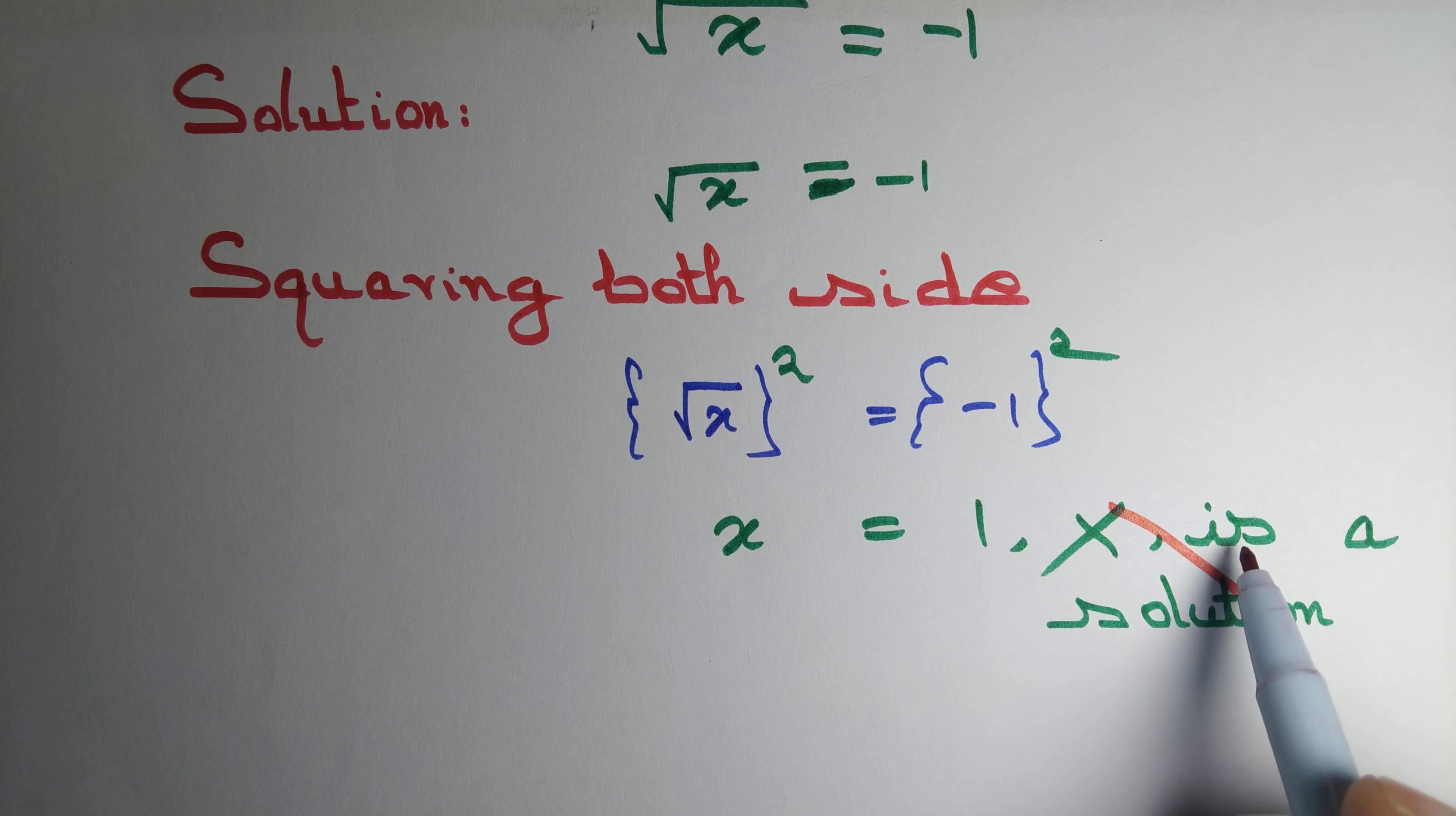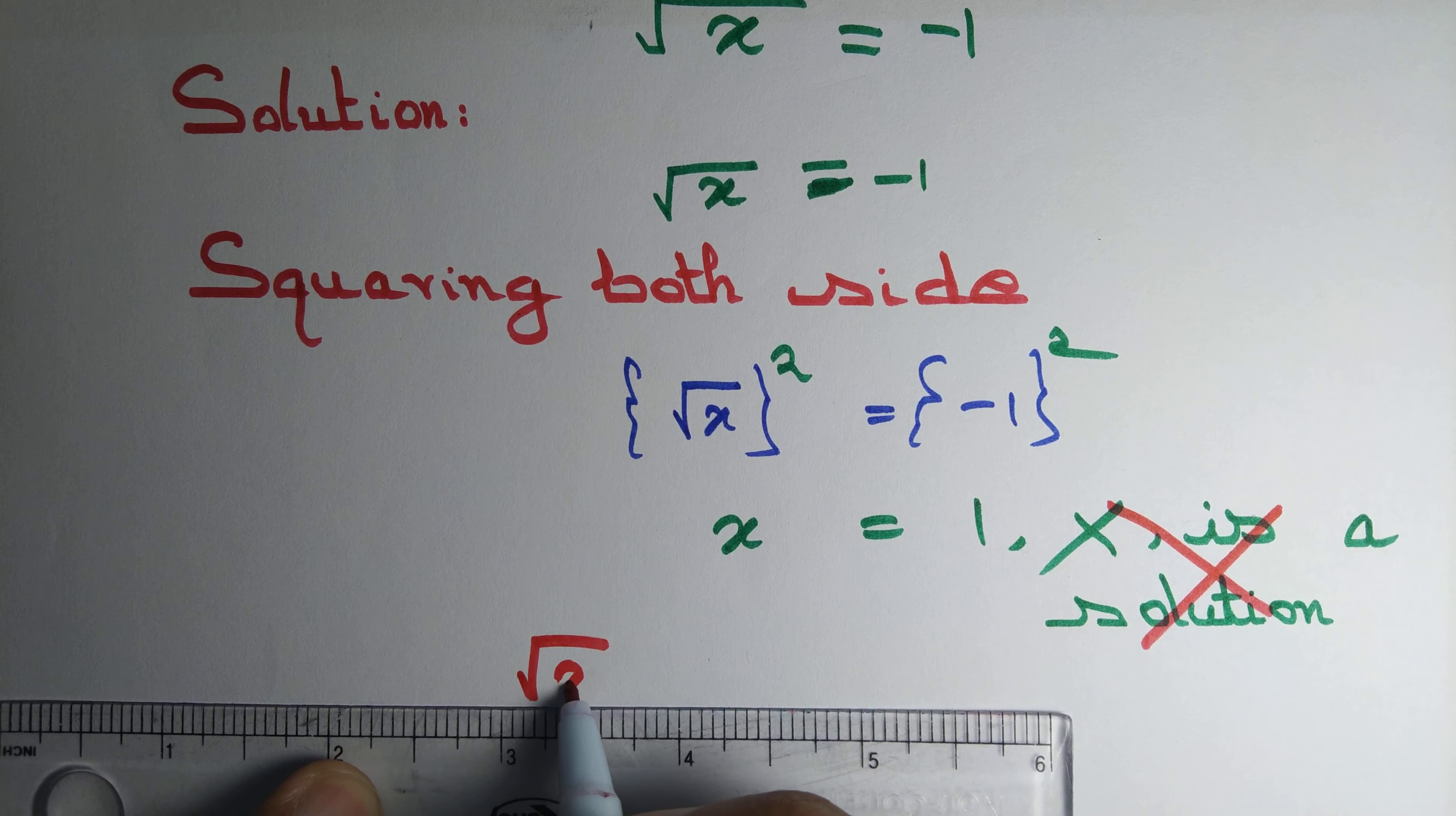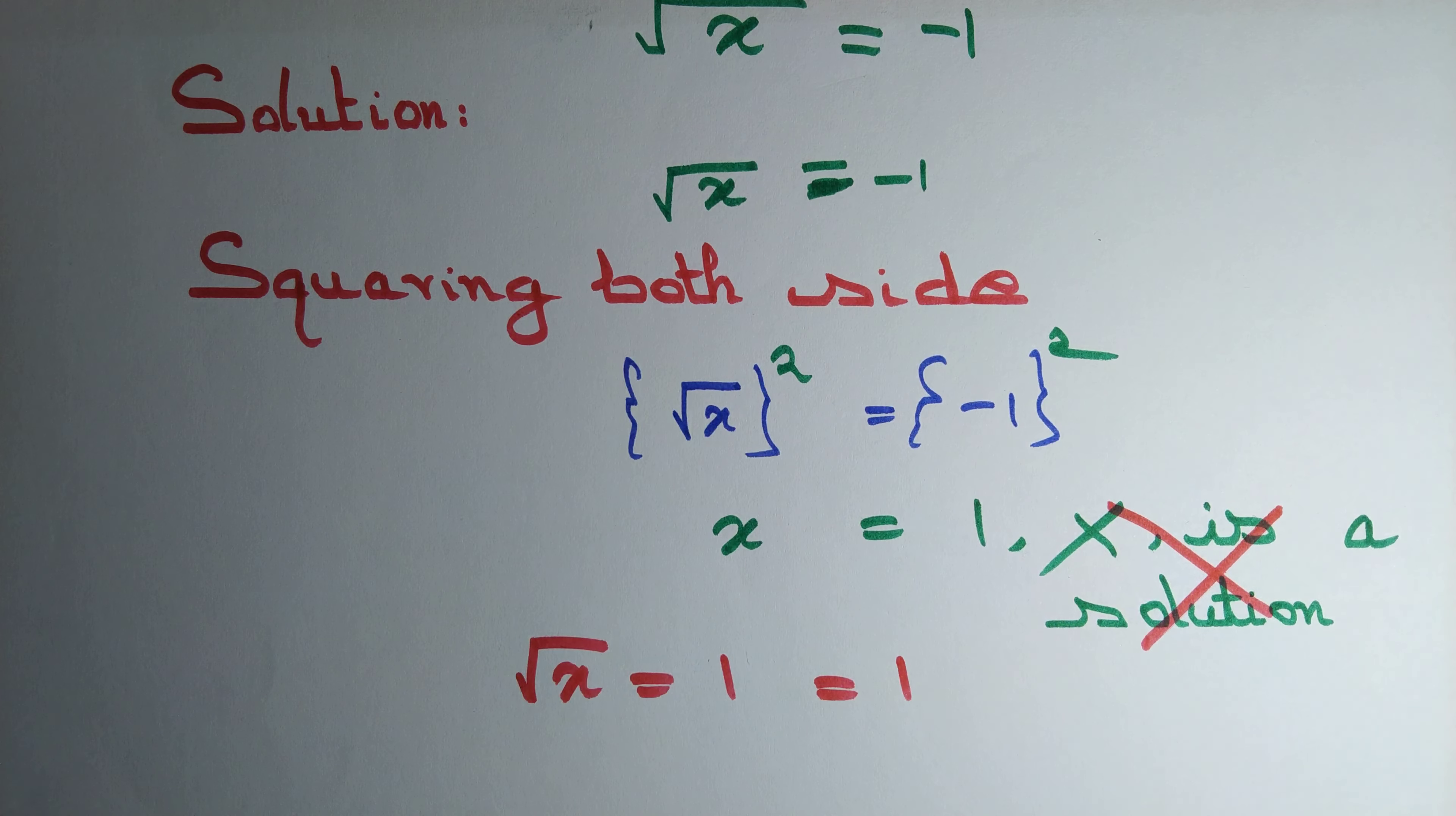Why is this wrong? The reason is when x = 1, the square root of x is √1 = 1, but we are given √x = -1. We want to solve that equation.